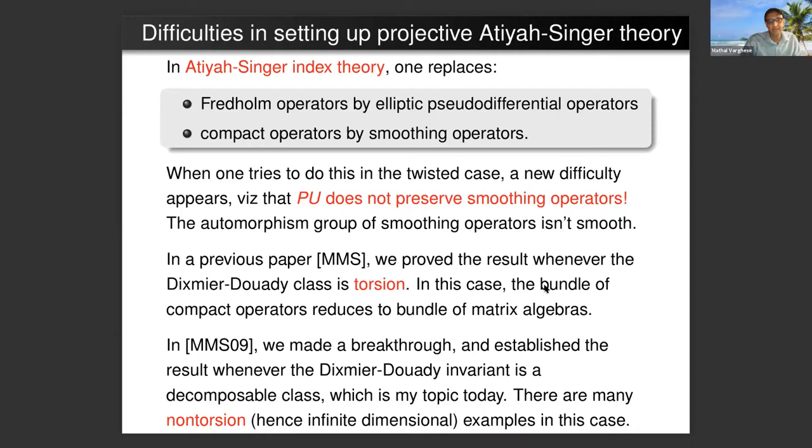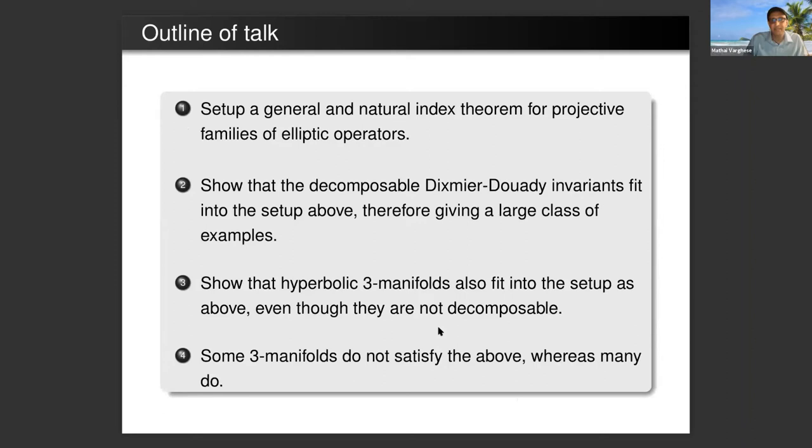In Atiyah-Singer index theory we don't want to deal directly with Fredholm operators, but we want to replace Fredholm operators by elliptic pseudodifferential operators and compact operators by smoothing operators. There is a new difficulty here because the projective unitary group does not preserve the smoothing operators.